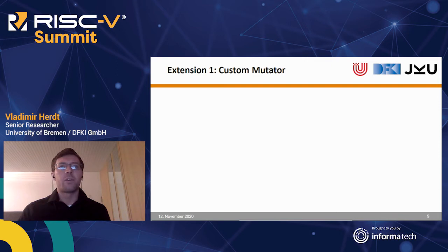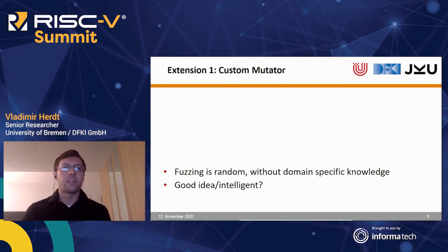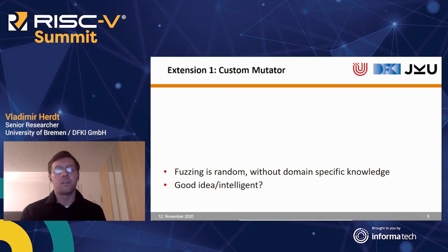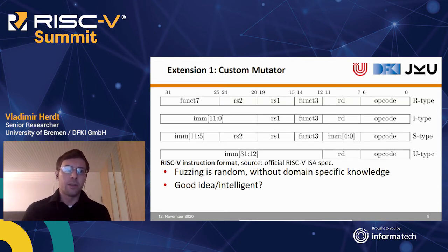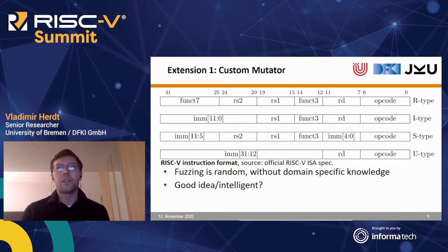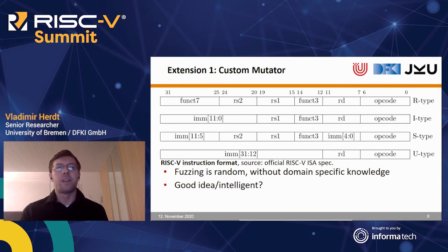When we look at the fuzzing process itself, fuzzing essentially uses randomization without domain-specific knowledge. However, it makes sense to teach the fuzzer information on the RISC-V instruction format. The format of different RISC-V instruction types includes the opcode, encoding of source and destination registers, as well as immediate values. We therefore provide a custom mutator to inject special values and instructions into the fuzzing process, and the fuzzer can then reuse this pattern to build longer sequences of valid instructions.